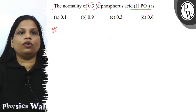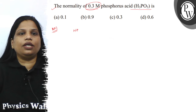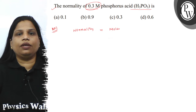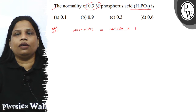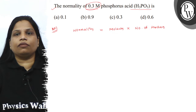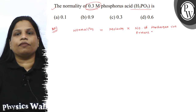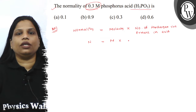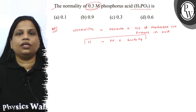If you know the relationship between normality and molarity — normality is equal to, for an acid, normality is equal to molarity multiplied by number of hydrogen ions present in the acid. Or, you can express it as: normality is equal to molarity into acidity of the acid. This is how we can represent it.